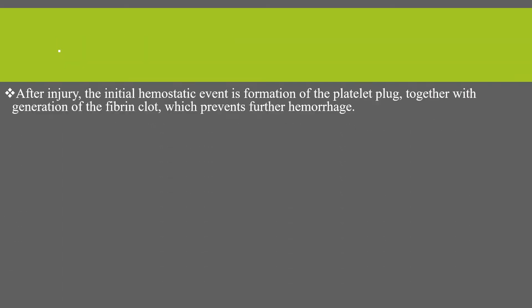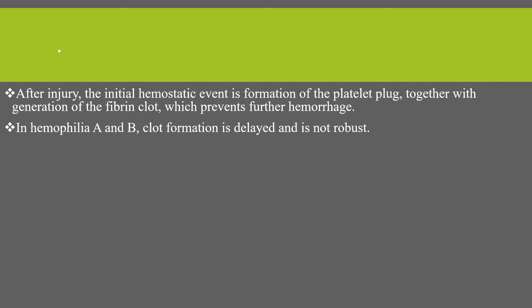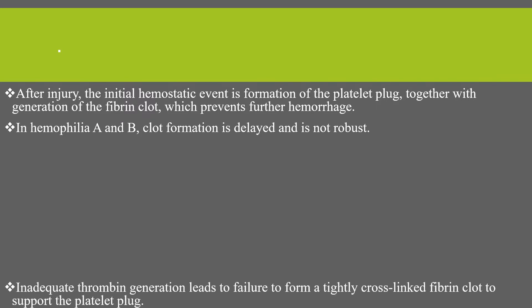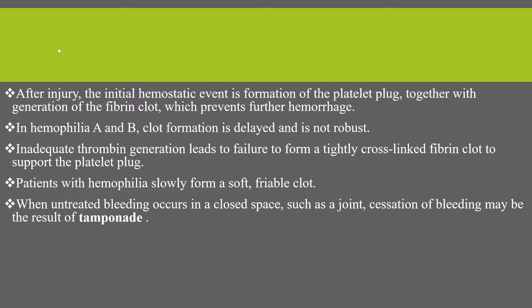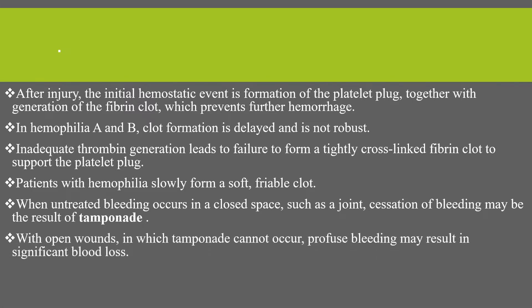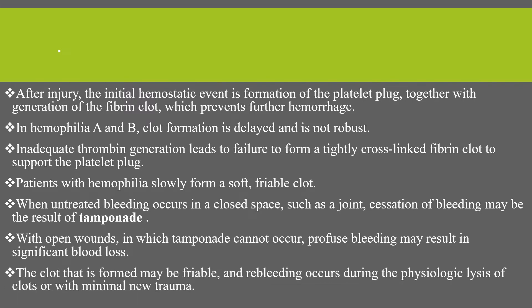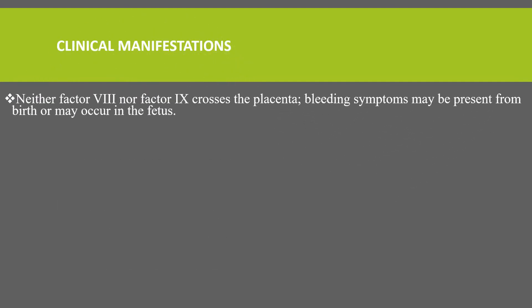After injury, the initial hemostatic event is formation of a platelet plug together with generation of the fibrin clot, which prevents further hemorrhage. In hemophilia, clot formation is delayed and inadequate thrombin generation leads to failure to form a tightly cross-linked fibrin clot to support the platelet plug. Patients with hemophilia slowly form a soft and friable clot. When untreated, bleeding occurs in a closed space such as a joint, and cessation of bleeding might be the result of tamponade. With open wounds, where tamponade cannot occur, profuse bleeding may result in significant blood loss, and re-bleeding occurs during physiological release of clots.